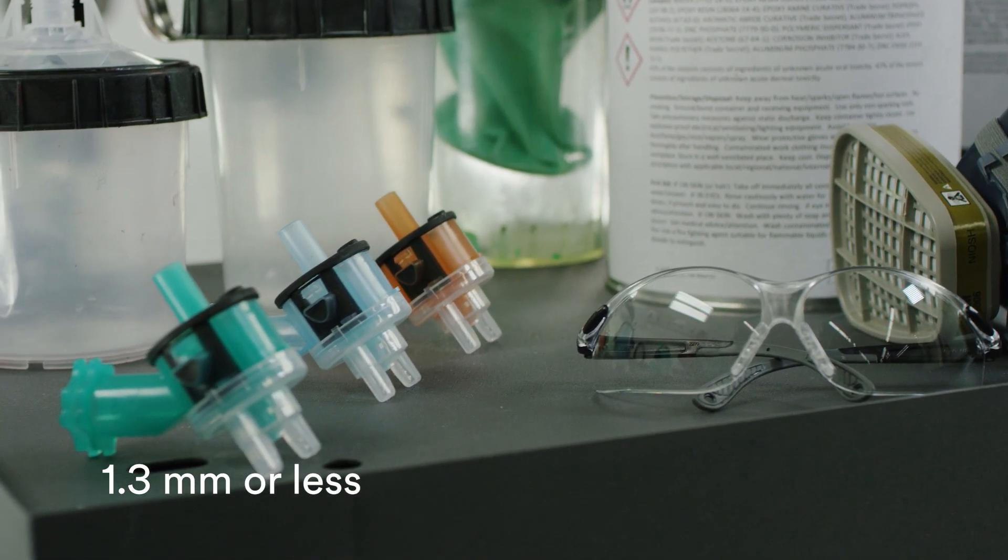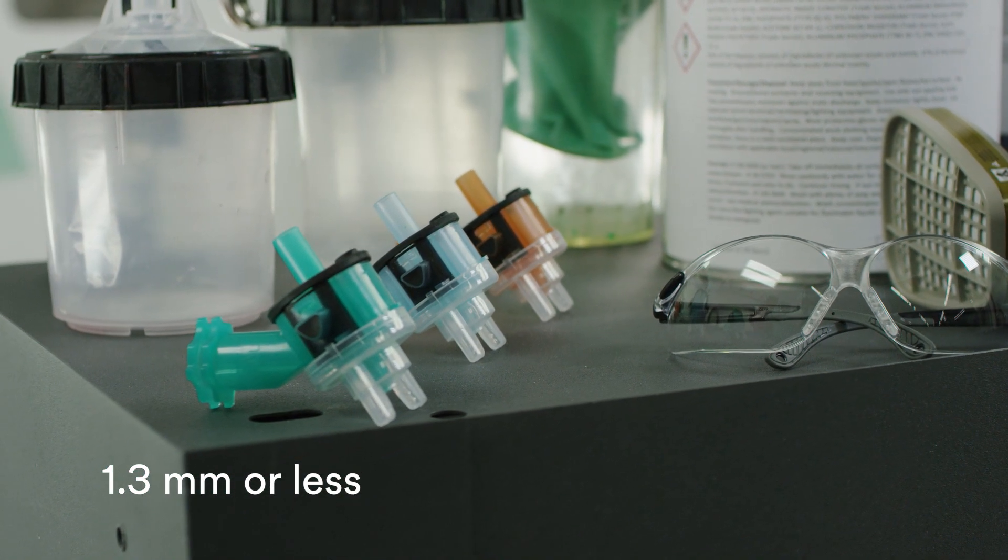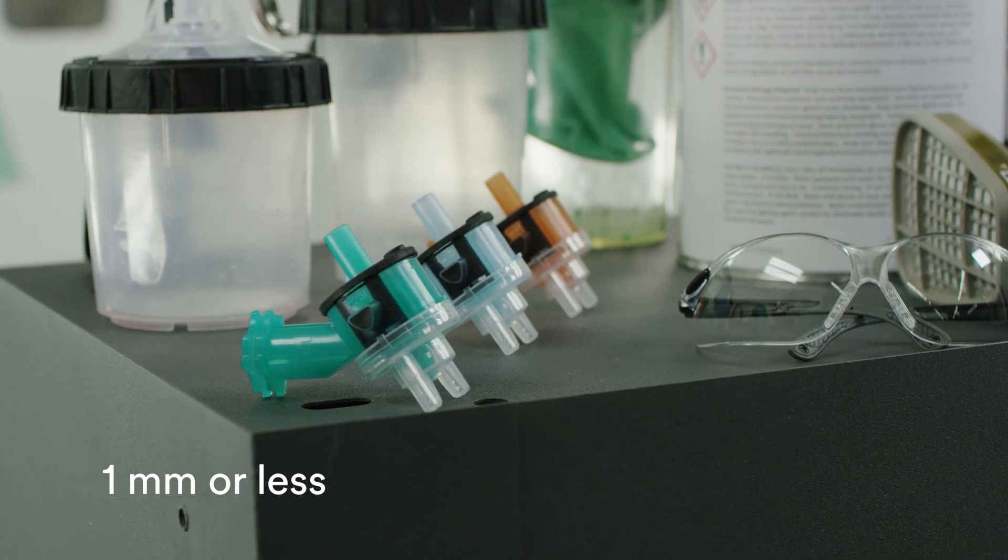Fluid and air nozzles should be 1.3 mm or less for siphon and gravity feed guns, and 1 mm or less for pressure feed guns.